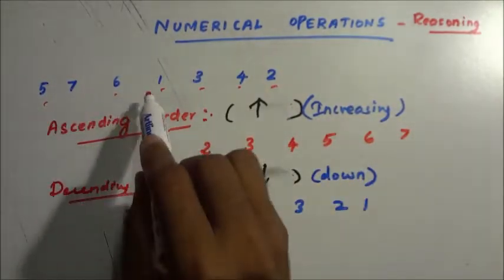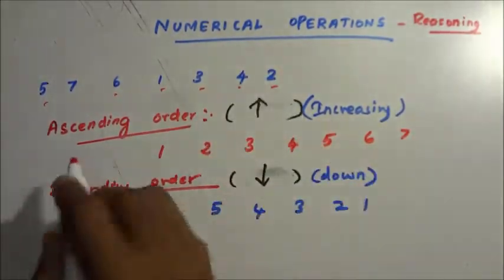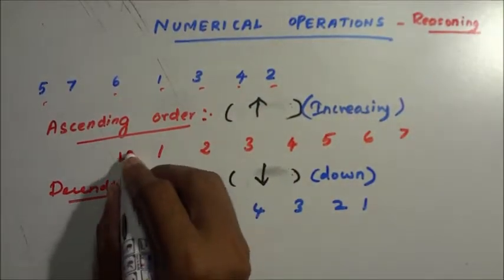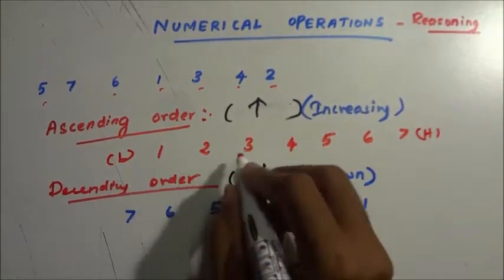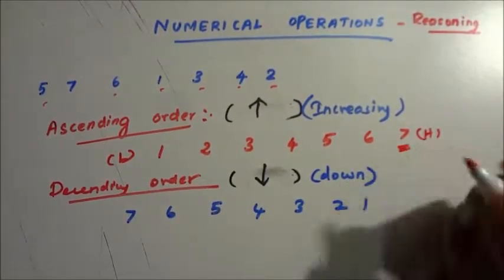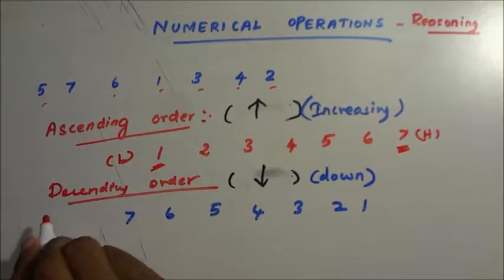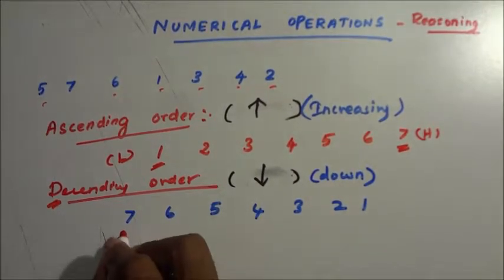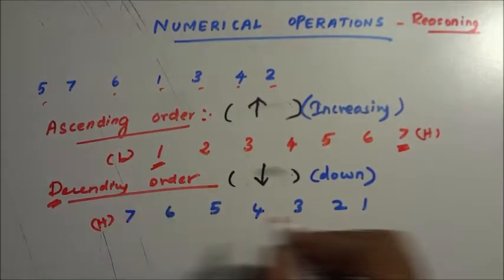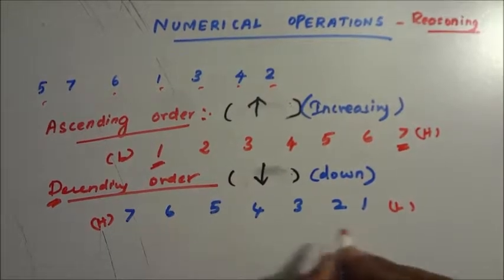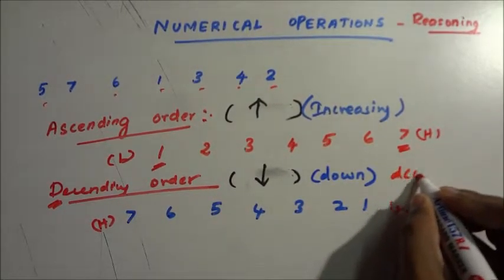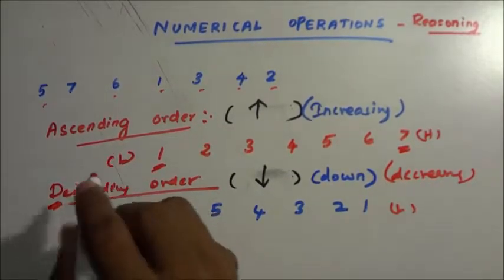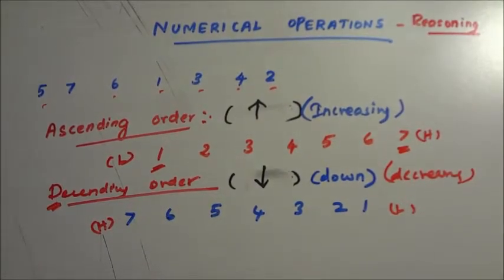So a series has been given: 5, 7, 6, 1, 3, 2, 4. What is ascending? Ascending is nothing but increasing — lowest value to highest value. The starting value will be the lowest and the last value will be the highest. In descending order, D for down — highest value to lowest value. So descending means decreasing. We have to remember how to arrange a series in ascending and descending order.